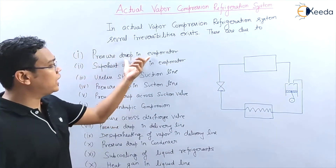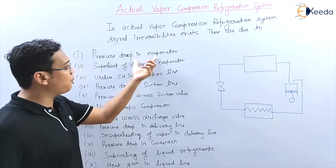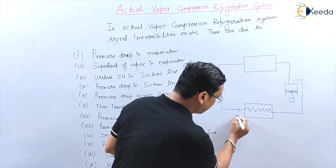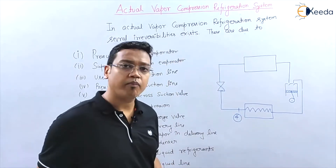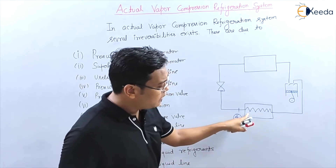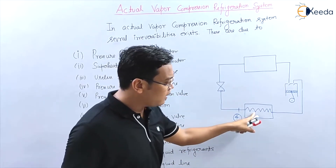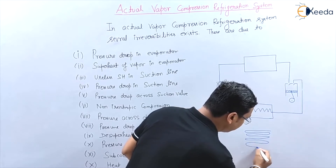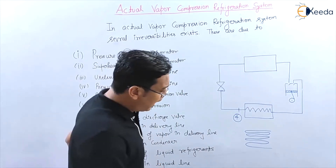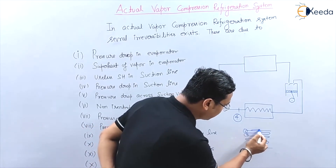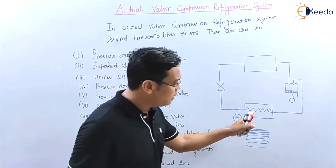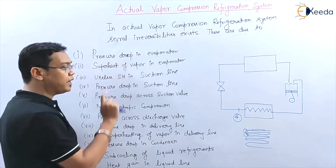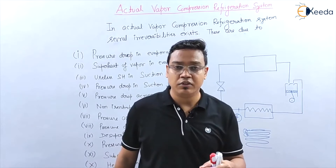The first irreversibility is pressure drop in the evaporator. Starting from point 4, there is a pressure drop in the evaporator because of the piping arrangement — the bends and friction in the piping cause the pressure to drop.